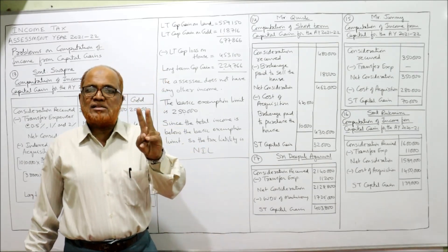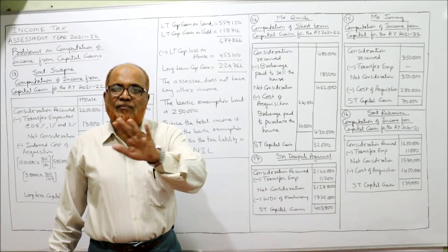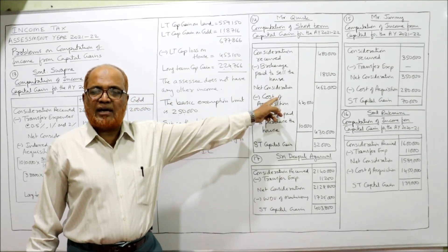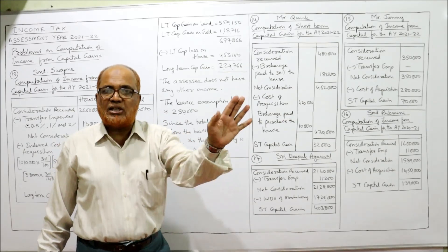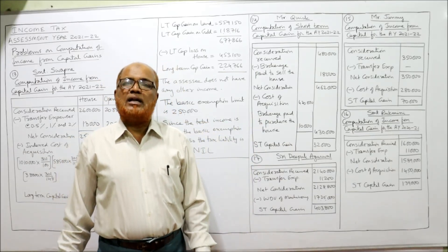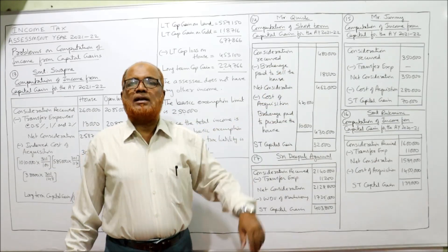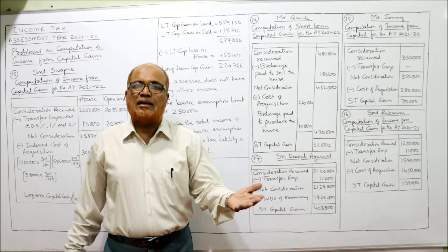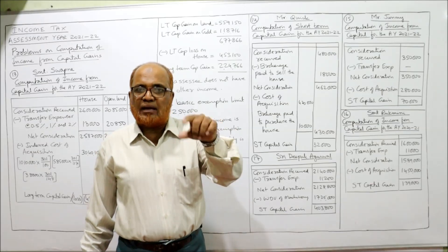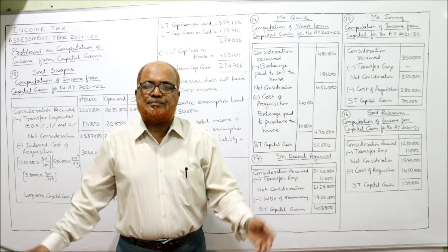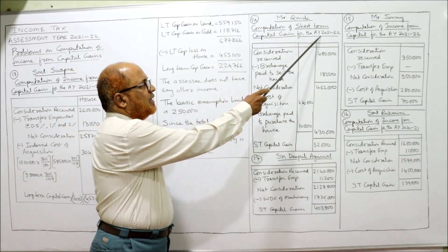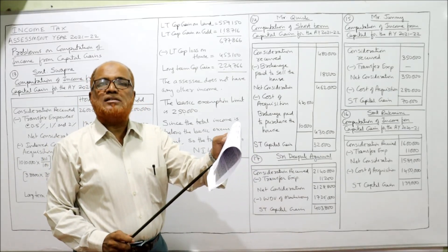There are two key differences between STCG and LTCG. First, for short-term capital gain, indexed cost of acquisition is not calculated — only the actual cost is taken. Second, the tax rate on LTCG is a flat 20%, whereas tax on short-term capital gain is calculated on the slab system along with other incomes such as income from salary and income from house property. The short-term capital gain is added to normal income for taxation.